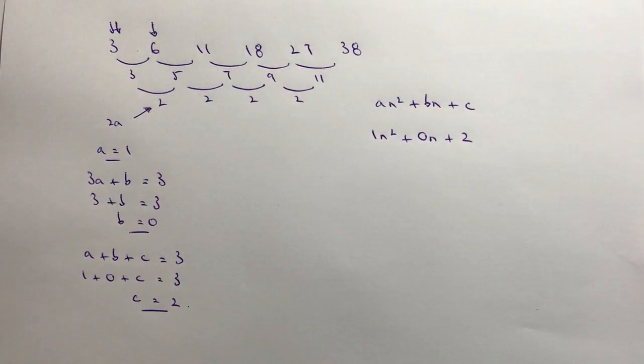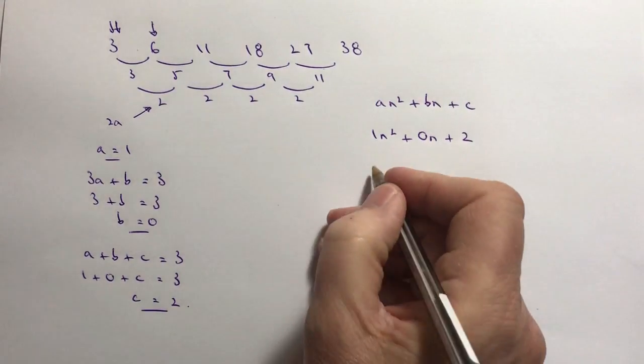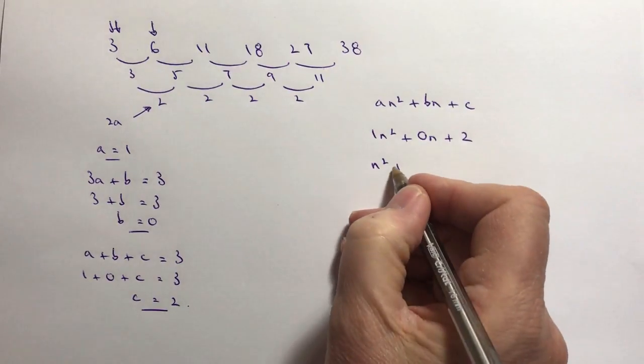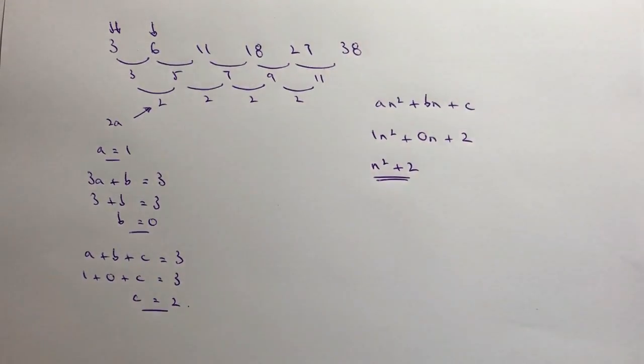Just looks a little bit untidy at the moment so I'm going to tidy that up. Well, 1 n squared we normally write as just n squared, 0 n means nothing times n so that's going to be nothing, and then I've got a plus 2 at the end. So in answer to this particular question, the quadratic sequence would be described as n squared plus 2.